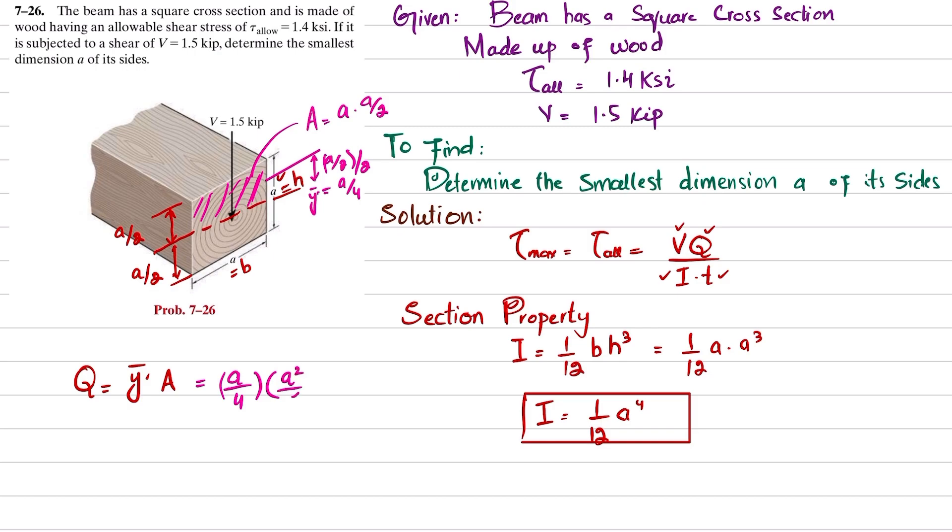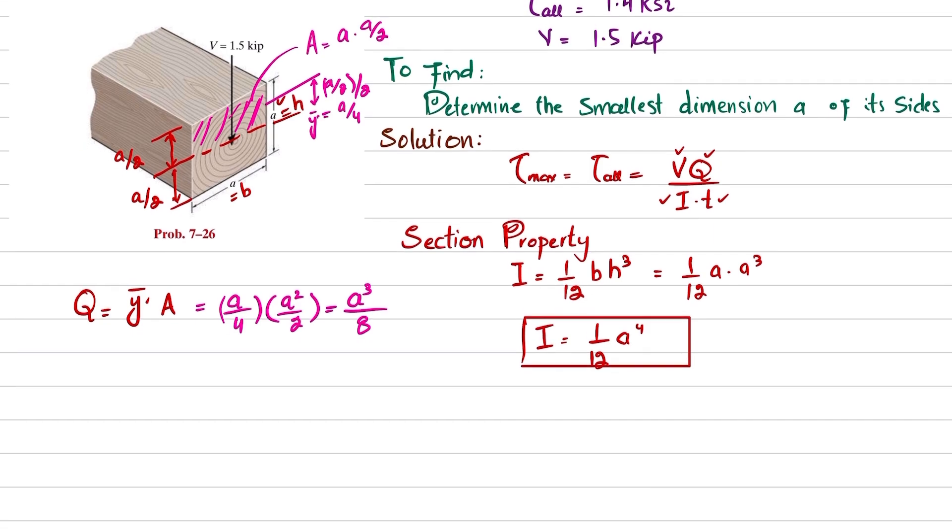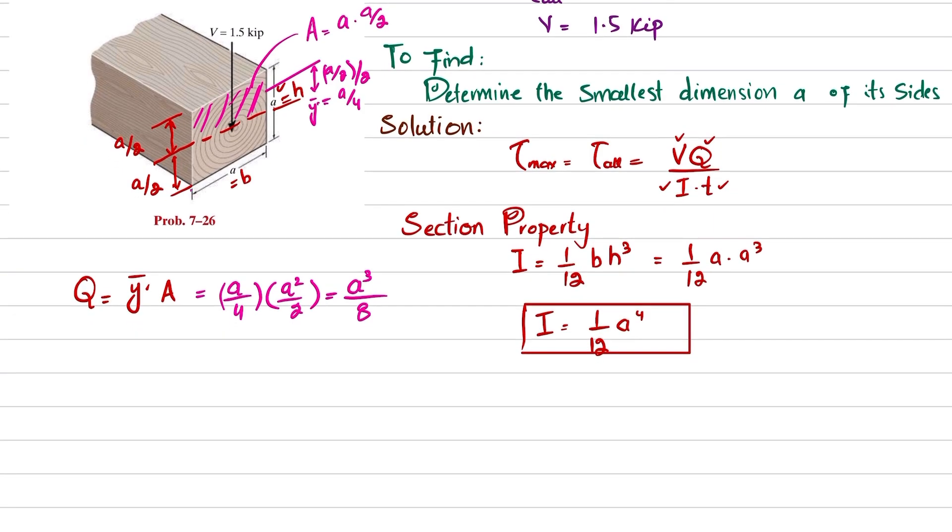Now you can see the thickness of this beam is also equal to this width b, so t is also equal to a. Now you have Q, you have I, you have t, you have V. You can just put it in the formula: τ_allowable = V·Q / (I·t).